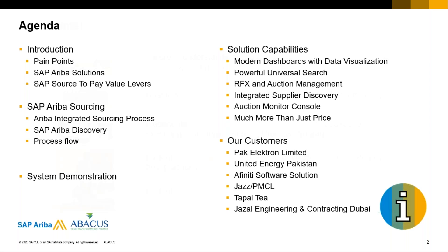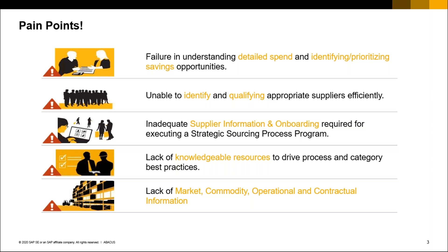Let's move to the pain points. Organizations all around the world were facing different problems. One was a failure in understanding detailed spend, and because of that failure they were unable to identify and prioritize saving opportunities. They were unable to identify and qualify appropriate suppliers efficiently. Supplier KPIs were not maintained, supplier risk was not mitigated. There was also inadequate supplier onboarding and information processes — even if organizations had those processes, they were long, tedious, and very time-consuming.